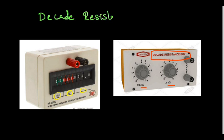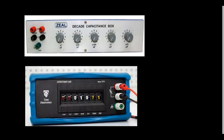Similarly, we also have the capacitance box — this is the decade capacitance box. See what you see here: these are switches, rotary switches, we call them thumbwheel switches. This is the decade capacitance box; we can get variable capacitance with different values. We can set it using these knobs, and here you see nanofarad, microfarad — this way it is mentioned.